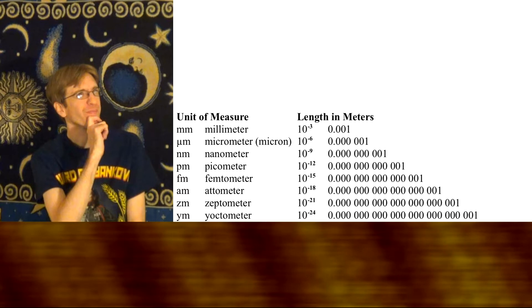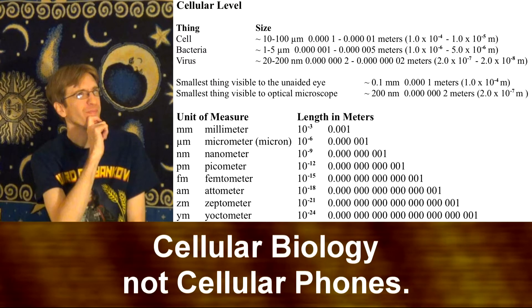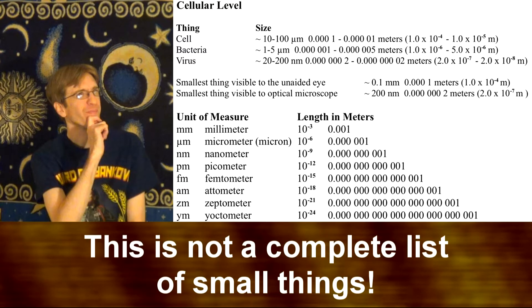With the use of microscopes, we can see things much smaller than that. Let's start with the cellular level and list things smaller and smaller as we go. This is not a complete list of small things, I just picked things that I thought would be the most interesting.